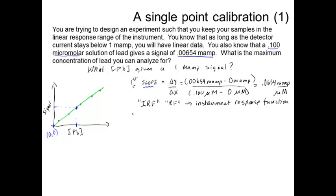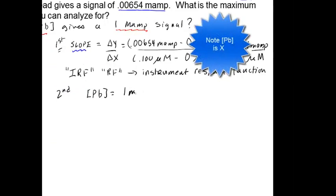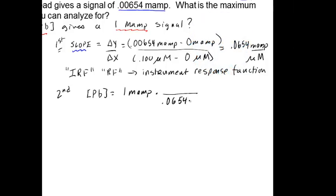Now, we have to think about our unknown information. What you have to realize is that our unknown is this: How much lead will give us a milliamp of signal? So, the second part of this problem is to rearrange this expression so that we can calculate the concentration of lead. That's what we want, after all, in our unknown. And we're going to get it from this one milliamp of signal. And we're going to do so by using our instrument response function. So, for one milliamp, we know that's going to be corresponding. We're going to divide by the IRF. And we get this nice unit analysis. The milliamps cancel. And what you can find from this is a concentration of lead of 15.3 micromolar.